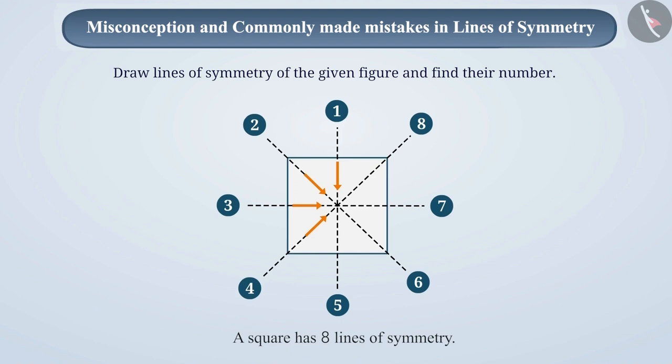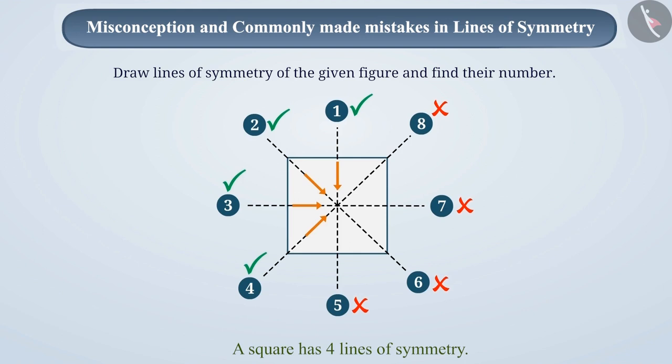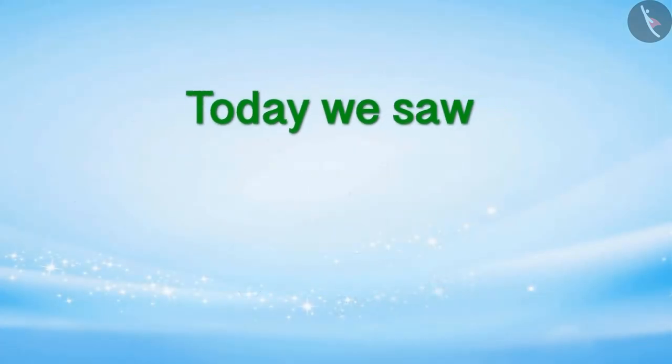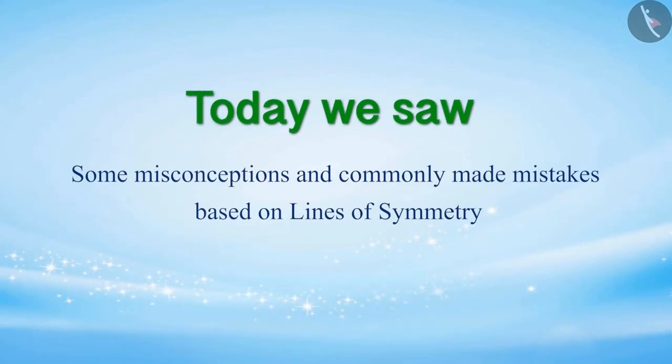Therefore, while counting, remember that you need to count every line just once. So remember that a square has four lines of symmetry. Today, we saw some misconceptions and commonly made mistakes based on lines of symmetry.